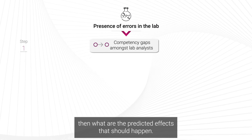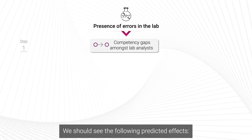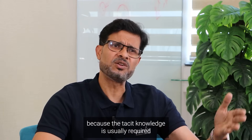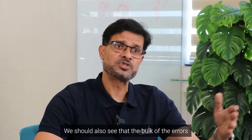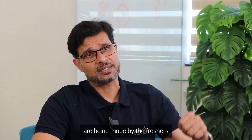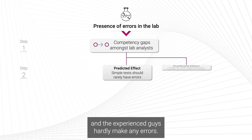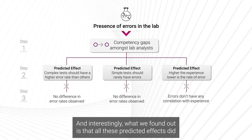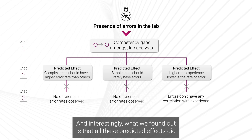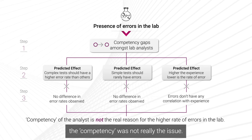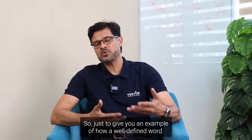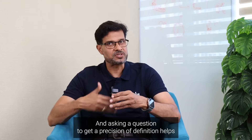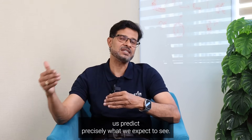We then asked: what are the predicted effects if tacit knowledge is the real cause? We should see minimal errors on simple tests, since tacit knowledge is usually required for complex tests. We should also see that most errors are made by freshers, with experienced staff making very few — and the higher the experience, the fewer the errors. Interestingly, none of these predicted effects existed, which meant competency was not really the issue. This shows how a precisely defined word allows us to predict exactly what we expect to see.